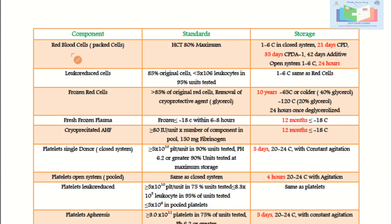QC of red blood cells (packed cells): the hematocrit (HCT) should not exceed 80% — 80% is the maximum. If stored at 1–6°C in a closed system using CPD anticoagulant, the expiry is 21 days. If CPDA-1 anticoagulant is used, the expiry is 35 days. If AS (additive solution) is used, the expiry is 42 days. In an open system stored at 1–6°C, the expiry is 24 hours. For leuko-reduced cells, 85% of original cells must be retained, leukocyte count must be less than 5 × 10⁶, and 95% of units tested must meet this standard.